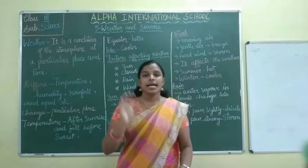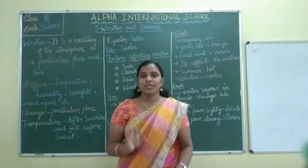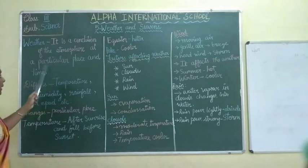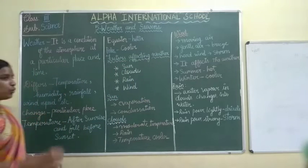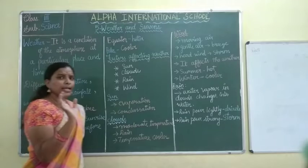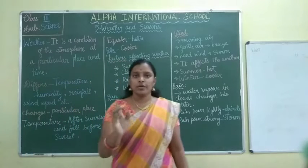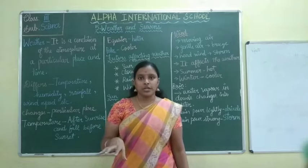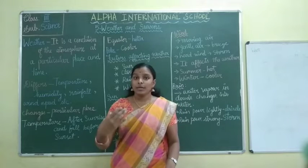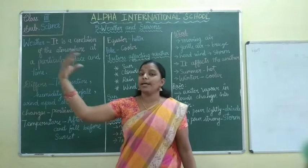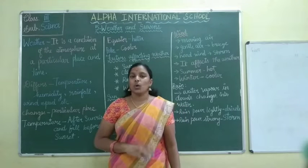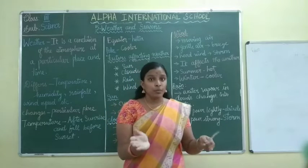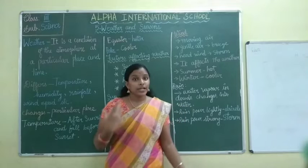The weather is a condition of the atmosphere. It can be only in a particular place — it is different from one place to another. If you are in one place, the weather will be different when you go somewhere else. Even it can be different from one area to another. We cannot predict it.